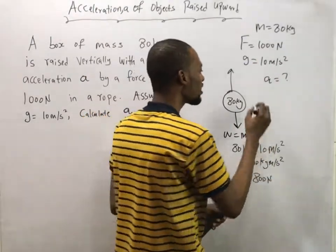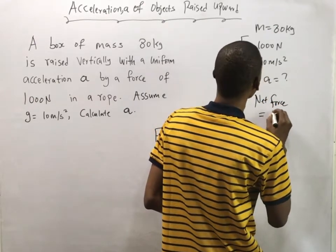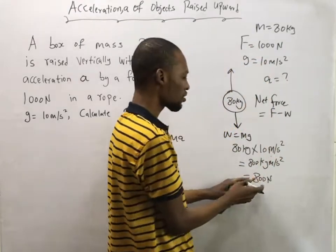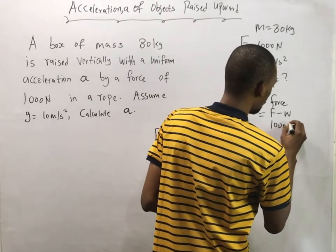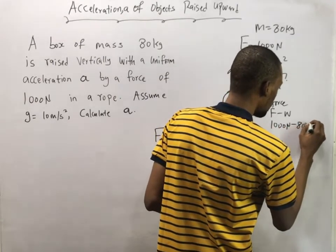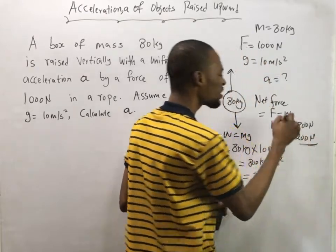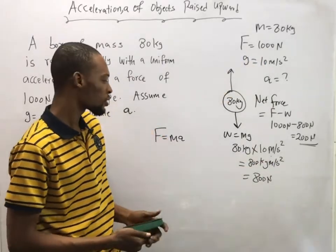So we can say net force equals F minus W, that is the force minus weight, which is simply 1000 Newton minus 800 Newton. This will give you 200 Newton. So that is the net force applied. You need to subtract the weight from the force.